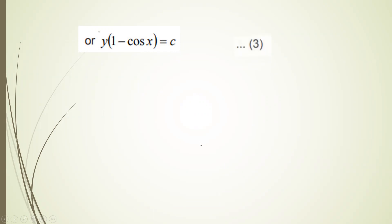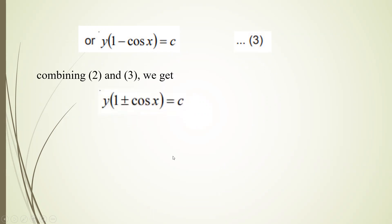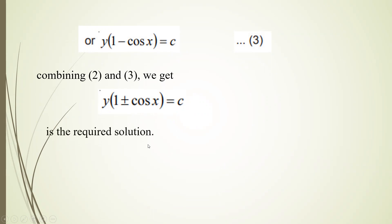For the other factor, similarly integrating gives y(1 - cos x) = c. Combining both solutions (the ± cases), the required general solution is y(1 ± cos x) = c.